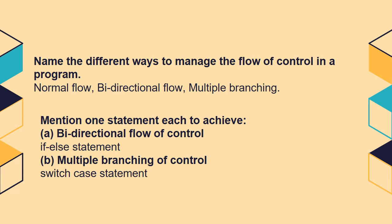Name the different ways to manage the flow of control in a program. Here we are going to discuss the different ways of managing the flow of control in a program. There are three types: one is normal flow, bi-directional flow, and multiple branching.